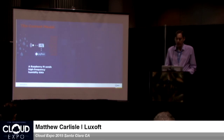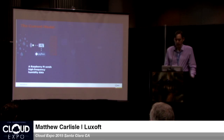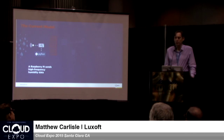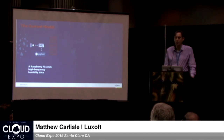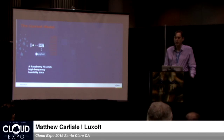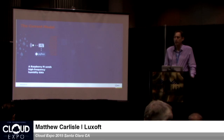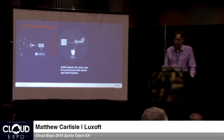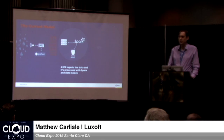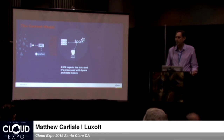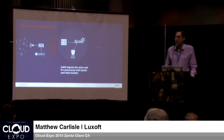First we'll talk about the current model, and I'm going to use a specific example — a Raspberry Pi device, which is a relatively powerful edge sensor in a little Linux box running an ARM processor, collecting humidity data at a fairly high frequency — a couple of times a second, 10, or 100 times a second. That data would typically go up to the cloud, in this example to AWS. The data is ingested and processed in some kind of processing engine. I'm using Apache Spark, which is a Hadoop-based processing engine, and we might use some data models, do some machine learning.